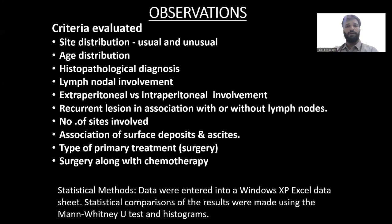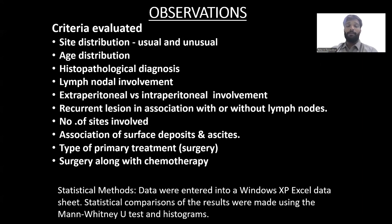Observations evaluated included the site, the age, histopathological findings, nodal involvement, extra-peritoneal versus intra-peritoneal involvement, recurrence lesion with or without lymph nodes, number of sites, associations, the amount of ascites, type of primary treatment given, and surgery along with chemotherapy.